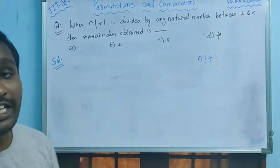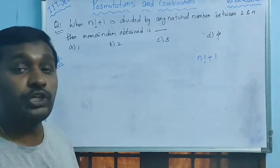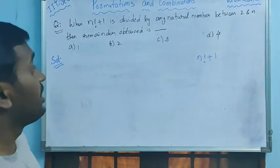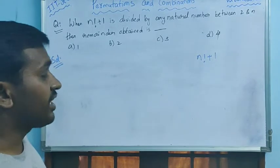Here, when n factorial plus 1 is divided by any natural number between 2 and n, then the remainder obtained is what? n factorial plus 1.